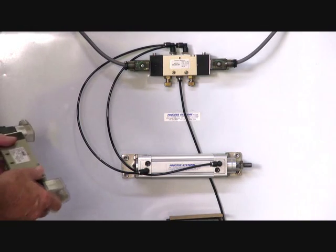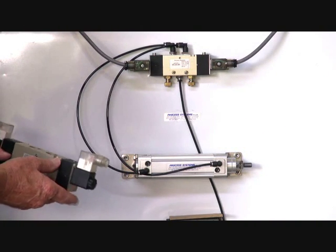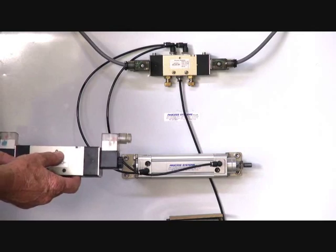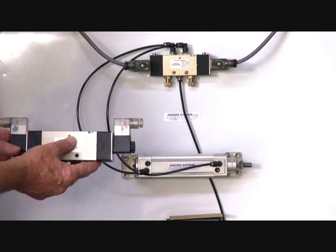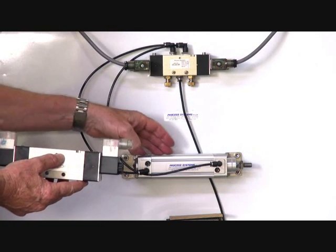Series A6010, A610. They're a 5/2 bi-stable solenoid valve, double solenoid, designed to operate pneumatic actuators.